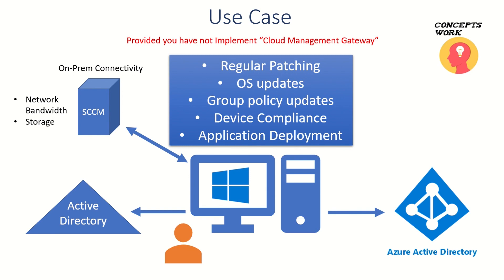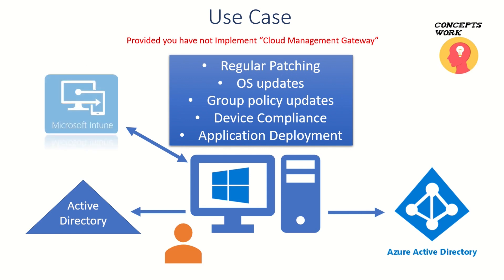In a typical environment, if you are only using SCCM and not using Cloud Management Gateway, then if your machine is not able to contact your on-premises environment it will not get OS updates or regular updates needed to adhere to security standards. So if you switch to Intune — meaning you get your hybrid Azure AD joined machines onboarded to Intune — you can get regular patching done irrespective of the client's location.